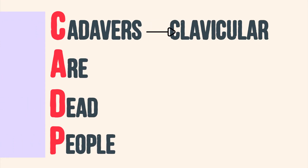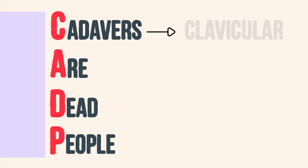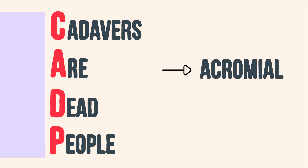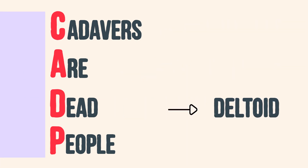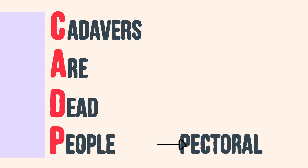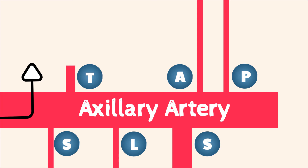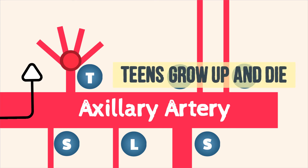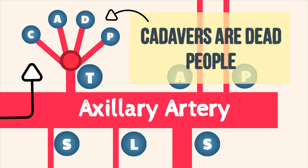Cadavers — clavicular branch. A — acromial branch. Dead — deltoid branch. People — pectoral branch. So teens grow up and die, and cadavers are dead people.